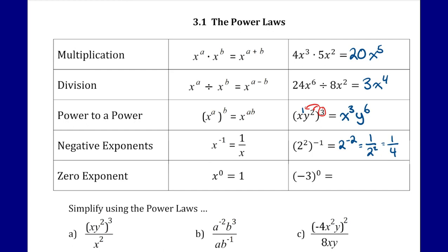The zero exponent rule states that anything to the power of zero is 1. For example, negative 3 to the power of zero is 1.